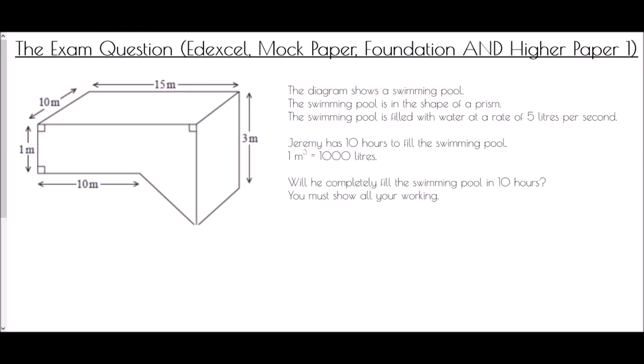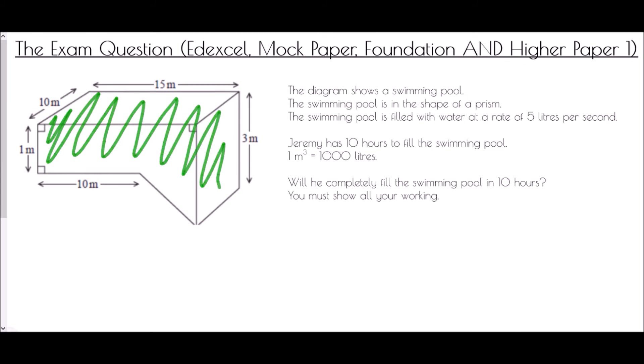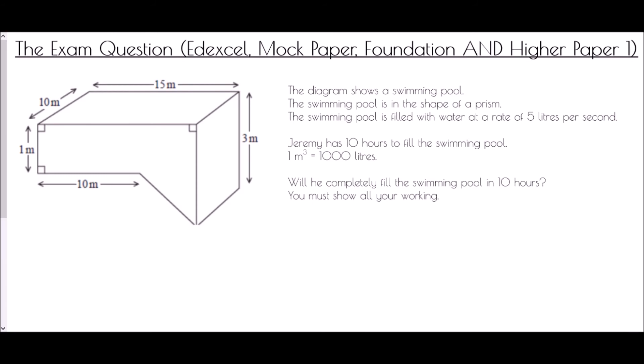And so we end with the exam question — this came from the Edexcel mock papers and it was on both the foundation and higher paper one. We have a diagram of a swimming pool, and the swimming pool is in the shape of a prism. The swimming pool is filled with water at a rate of 5 litres per second. Jeremy has 10 hours to fill the swimming pool. 1 metre cubed equals 1000 litres. Will he completely fill the swimming pool in 10 hours? This question is about volume, so we need to find the volume of that prism, and we need to think about the fact that this is a compound shape — a rectangle and a triangle.